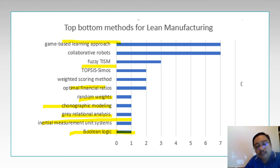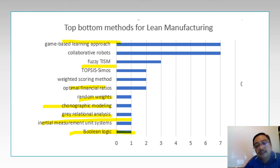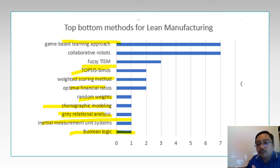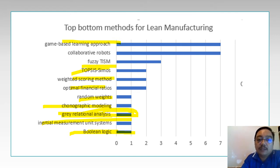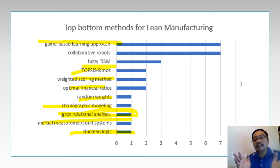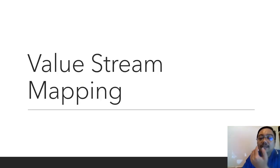Of course, there are reasons why people are not using these tools. Maybe they are new, maybe they are new methods worth exploring. If you are doing a master's or PhD, you may use gray relation analysis, TOPSIS, or a weighted scoring method. You can justify to your supervisor that you want to use this method because only one researcher has mentioned it — meaning it has research potential. Or you may use a game-based learning approach applicable to certain sectors. This is the list I analyzed and the results I got.